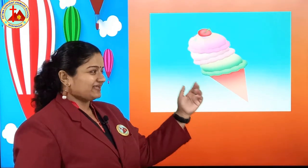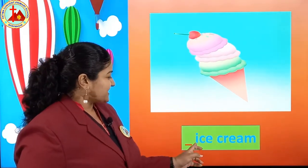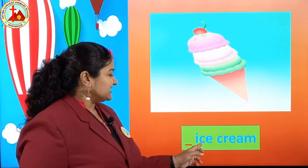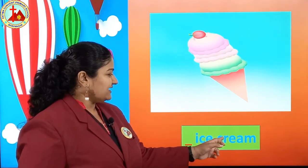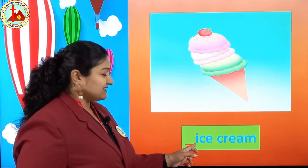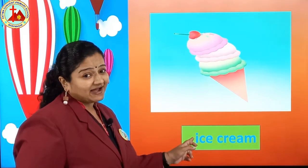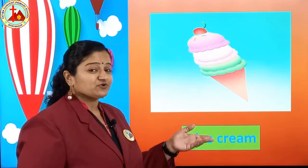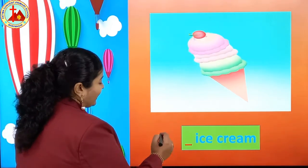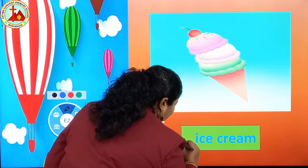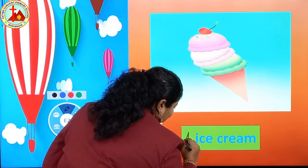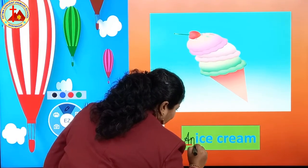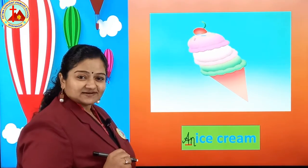Next one is yummy — ice cream. Ice cream spelling starts with I, C, E — ice cream. First letter is I. I is a vowel. So before vowel: AN. Write A from A directly write: an ice cream. Children, got it?